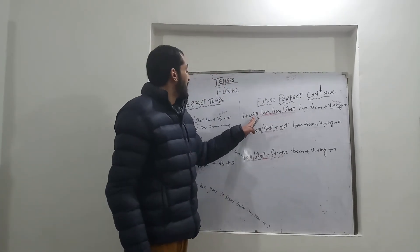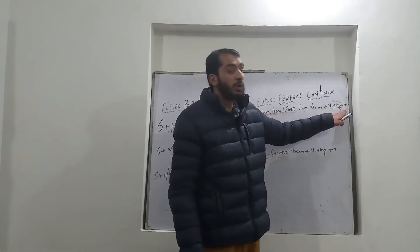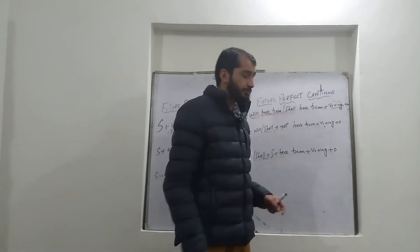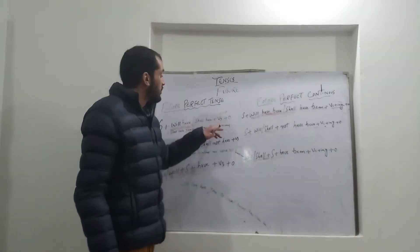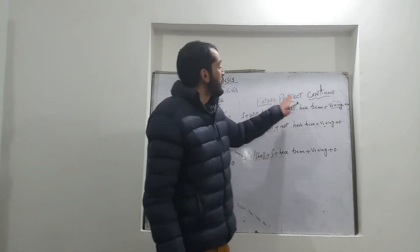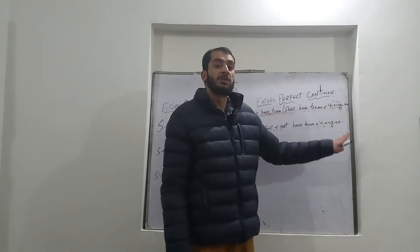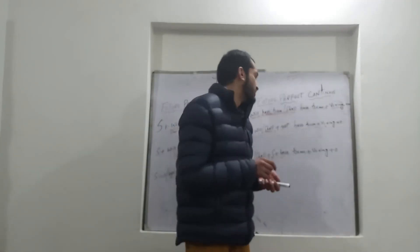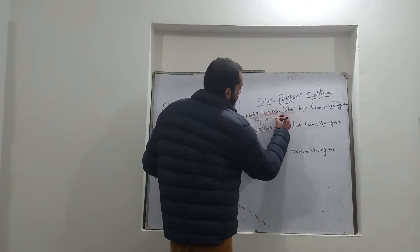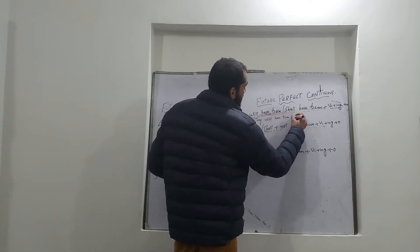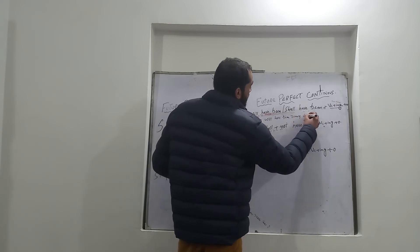For positive sentences, the structure is: subject plus will have been or shall have been plus verb base form plus -ing plus object, plus 'since' or 'for.' In the future perfect tense we use the past participle form of the verb, whereas in the future perfect continuous we use the present participle — that is, verb base form plus -ing. For example: They will have been running for an hour.